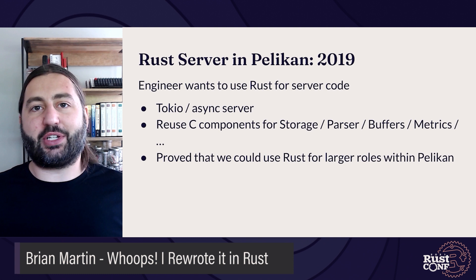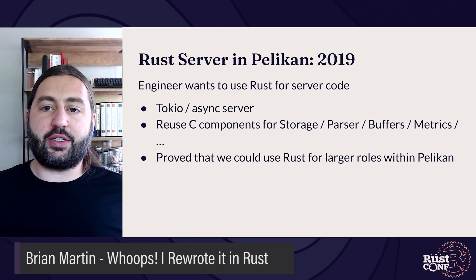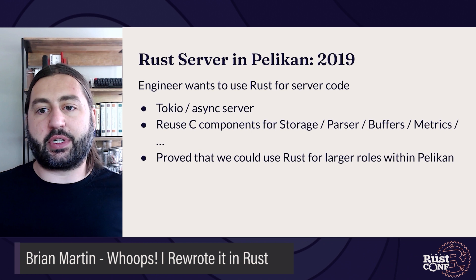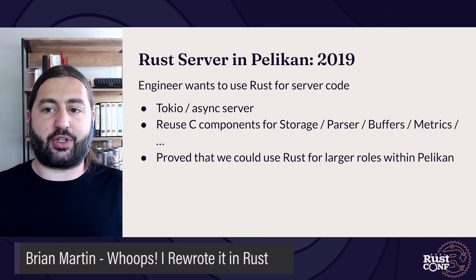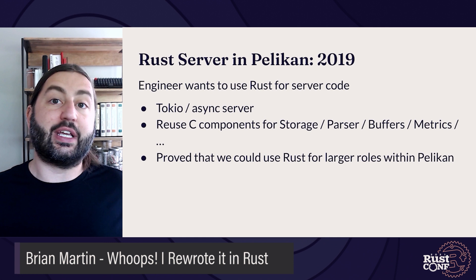Then in 2019, another engineer was a bit more ambitious and wanted to try using Rust for the actual server code. They decided to use Tokio to write the async server runtime, but leveraged the C components from the normal cache server for storage and some of the other foundational libraries. This showed we could do a lot more advanced layering of C and Rust together in the codebase, and I was excited to see that Rust could play a larger role in Pelican.